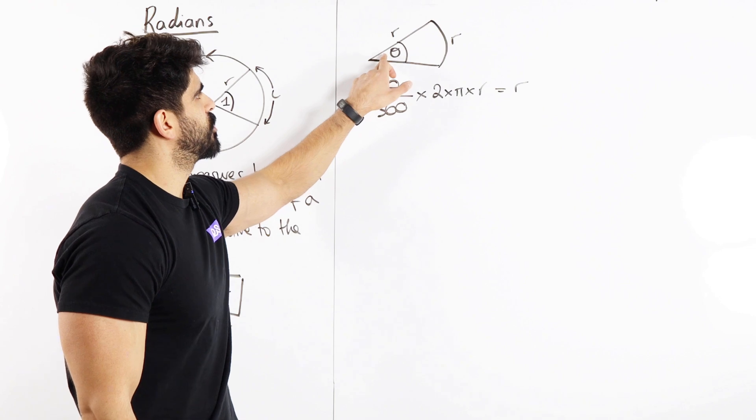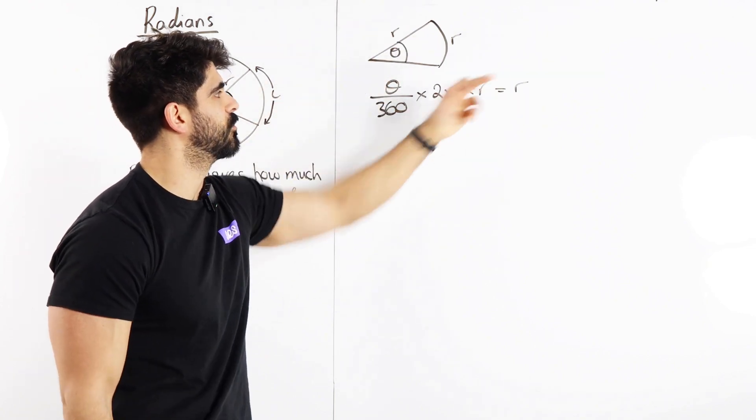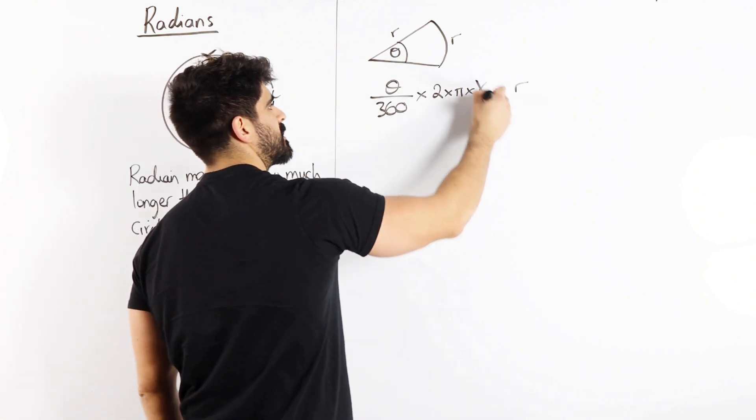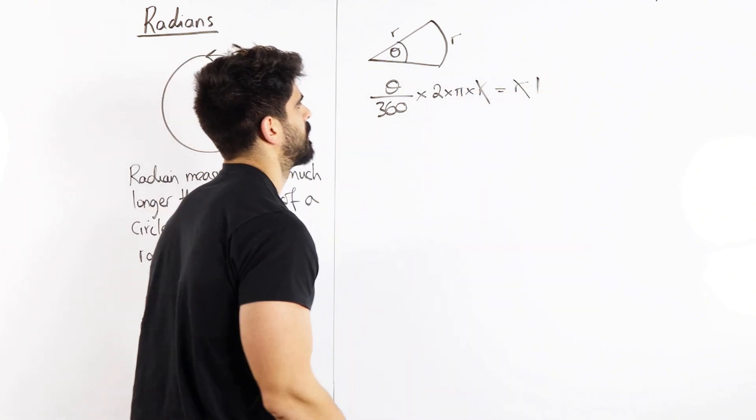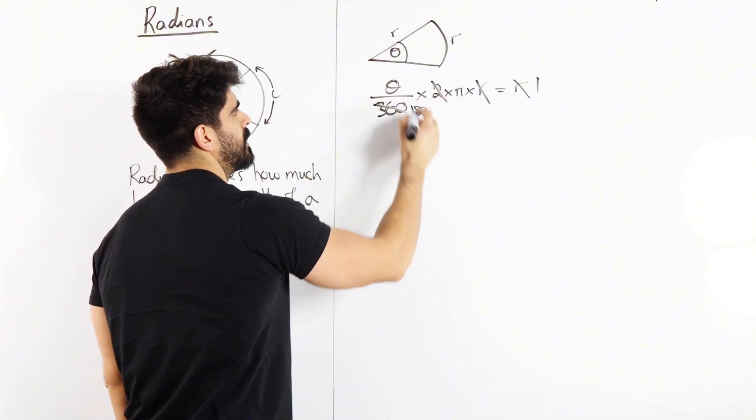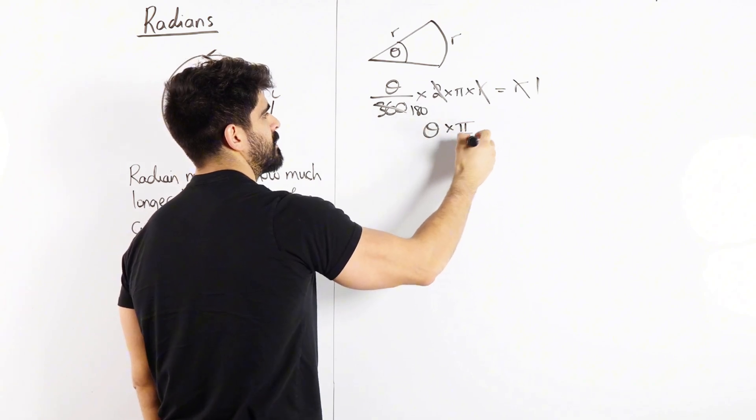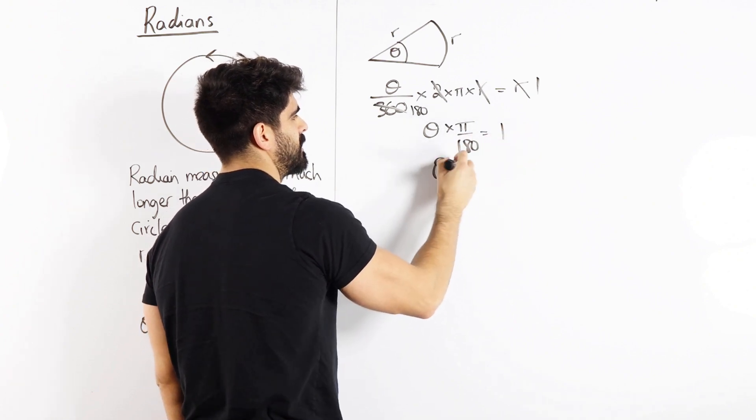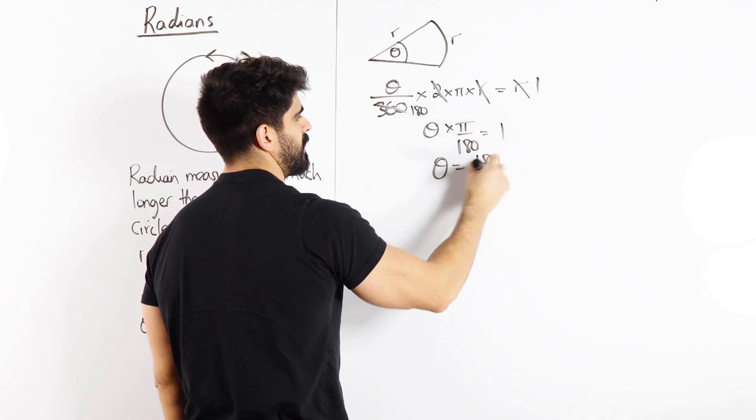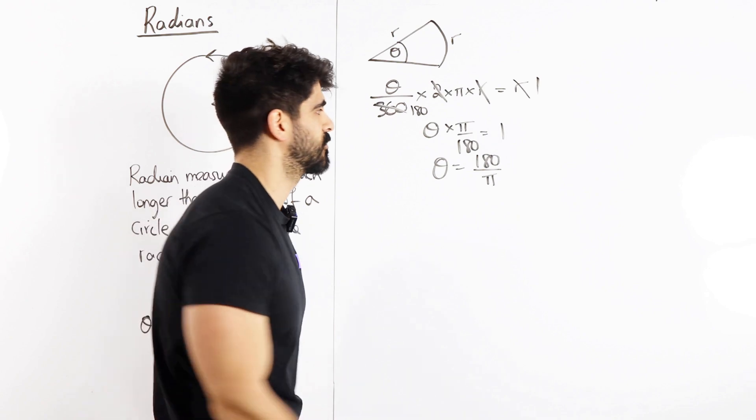So we're saying that ratio out of whole 360 times the circumference of a circle, we're equating them. So that means these r's cancel, the 2 cancels the 360 to make 180. So we have theta times pi over 180 is 1 times by 180, and then we divide by pi.